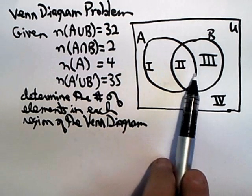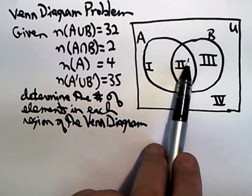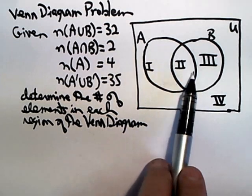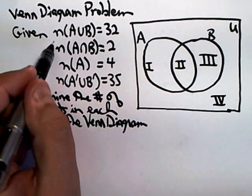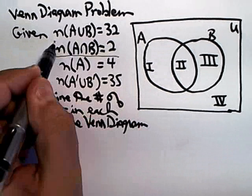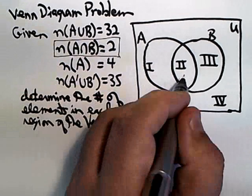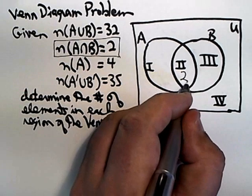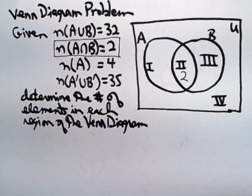As usual, if possible, we want to start in the innermost region, and that would be region 2, which is the overlap between A and B, and that would be the intersection of A and B. So we immediately know that region 2 has two elements in it.